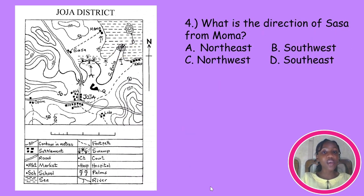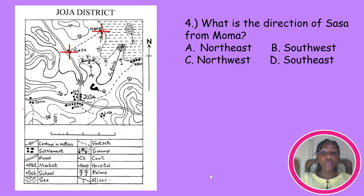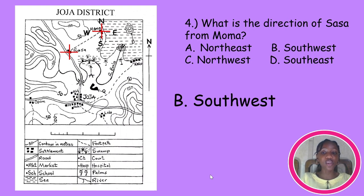What is the direction of Sasa from MoMA? Firstly, let's identify the settlements and put cardinal points on them. The question has already drawn a line connecting them, but the cardinal points will give the exact direction. Our reference point is MoMA — remember that the word 'from' is the indicator. So the direction of Sasa from MoMA will be southwest. Remember east comes before west when you've identified north and south. Don't make the mistake of swapping east with west.